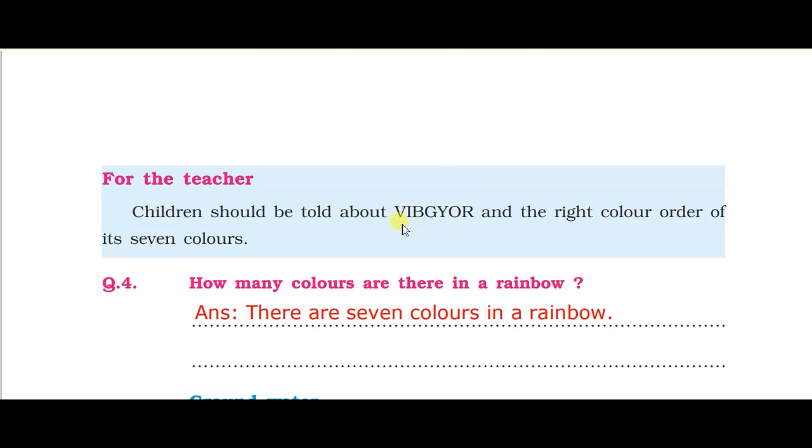This is the picture of a rainbow. This is a semicircle with seven colors. You can see the colors here — violet, indigo, blue, green, yellow, orange, and red.